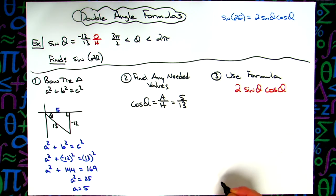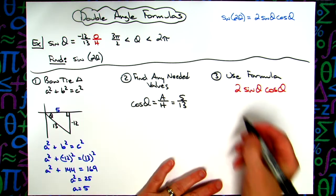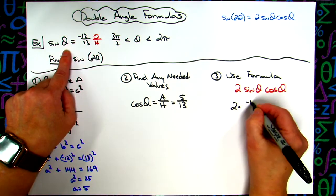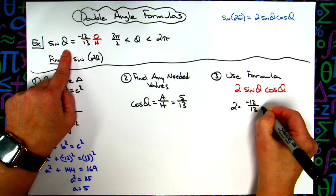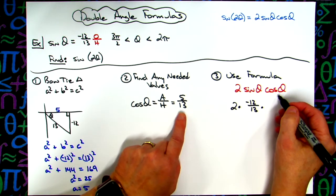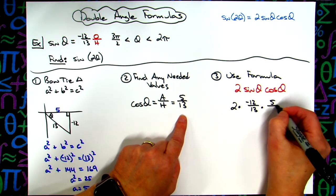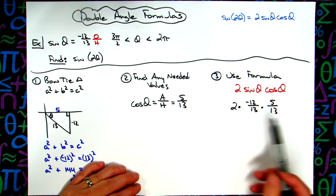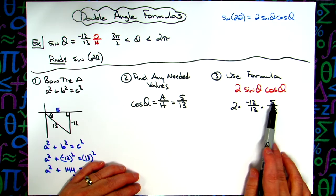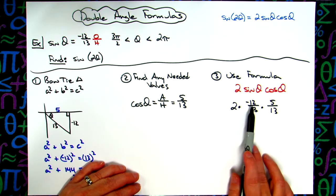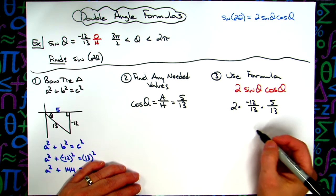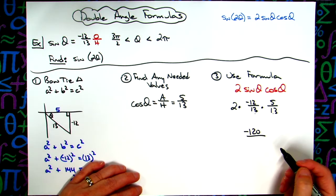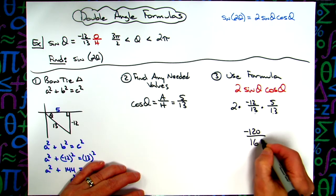Now I can come over here and I can use my formula because I have everything I need. 2 is in the formula. Sine theta is a negative 12 over 13. Cosine, which I calculated, is 5 over 13. Then it's straight multiply straight across the top, multiply straight across the bottom. You can do this without a calculator. 5 times 2 is 10 times that negative 12 right there, which would be a negative 120 on top. 13 times 13 there on the bottom is going to be a 169.